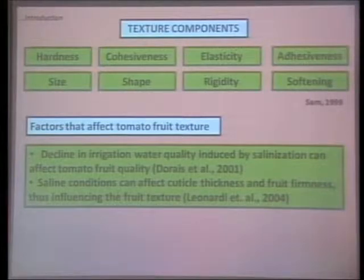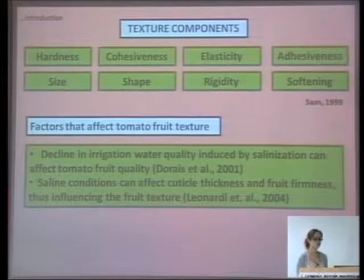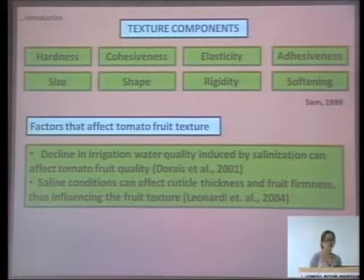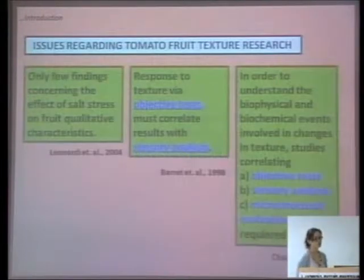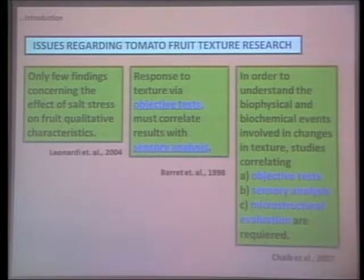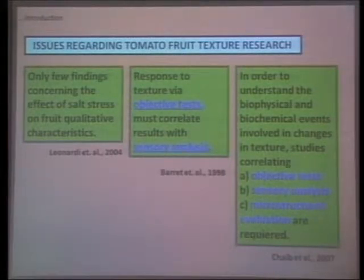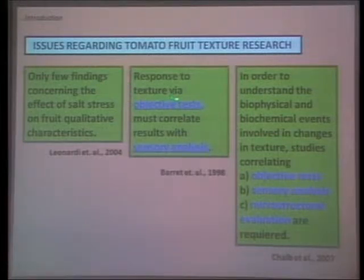Texture has different components like softening or hardiness, and factors that affect it. The quality of irrigation water is one such factor. It was observed, but not measured by Leonardi in 2004, that if tomatoes are grown under salt stress, the peel becomes thicker. A main issue in the research is that most studies focus on improvements salinity induces in quality, with very few addressing undesirable changes. Studies that measure texture through objective tests don't correlate with sensory analysis, such as organoleptic surveys.